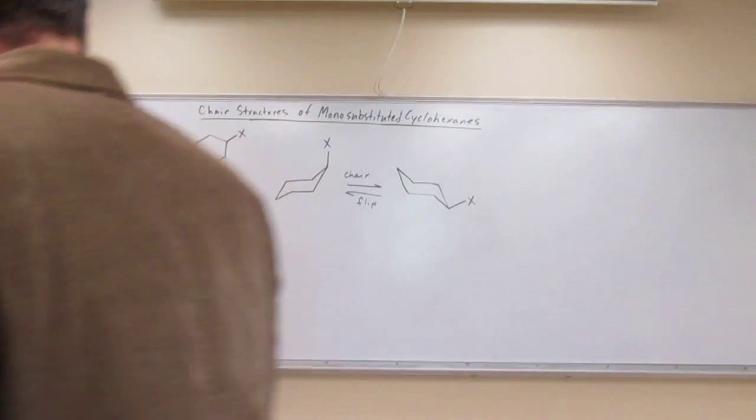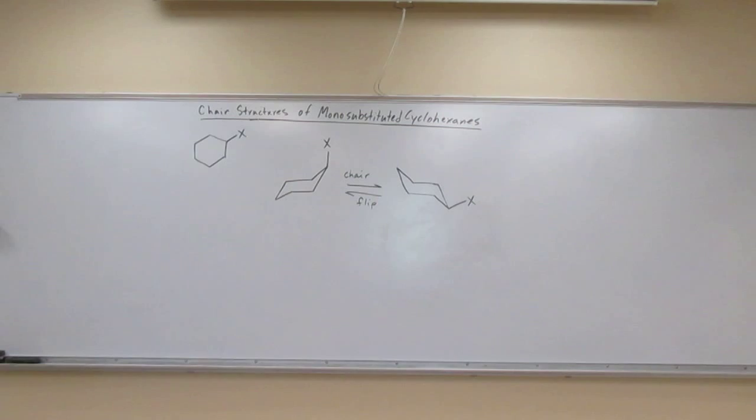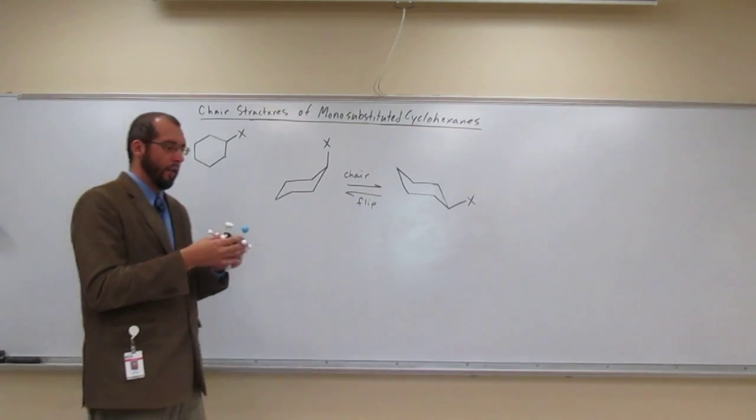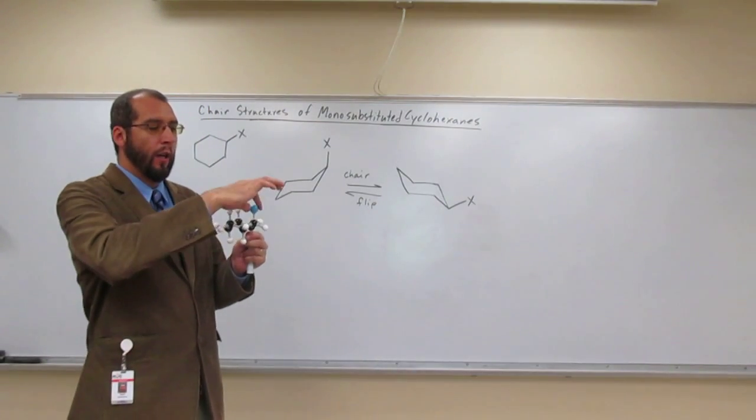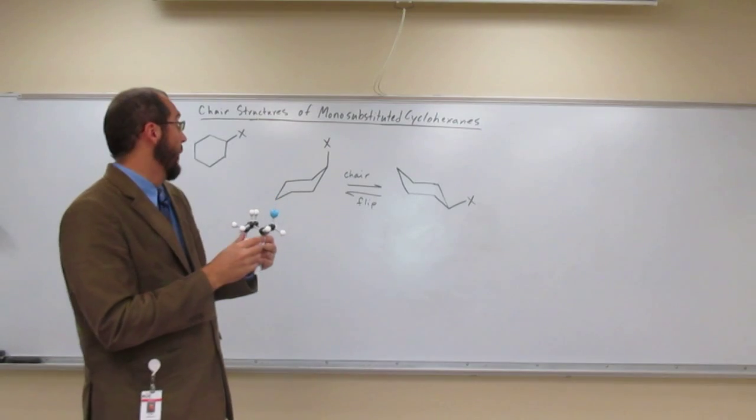I'd like to emphasize what we were just talking about. Now we have our chair monosubstituted cyclohexane chair structure with all its hydrogens in there. We're looking at the substituent to be this blue atom there.